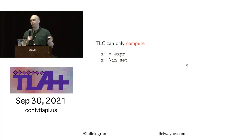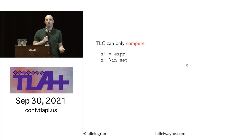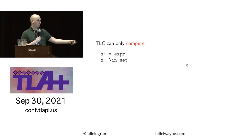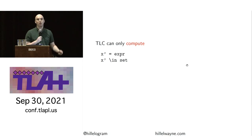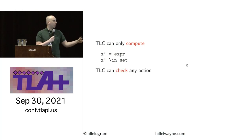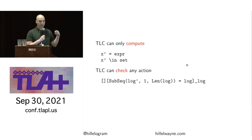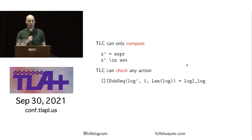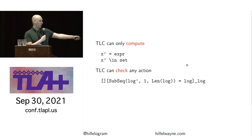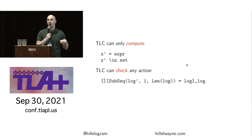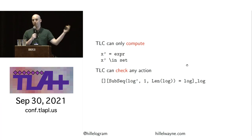This is really cool because it expands what TLC can do. TLC can only compute next states for statements like x' equals an expression, or x' is in a set of expressions. However, TLC can check almost any action. For example, if I have an append-only log and I want to make sure it is in fact append-only, I can say the subsequence of the new value of log from 1 to the length of the old value equals the old value of log. If I pop an element or change the beginning of log, this will raise an error.